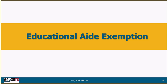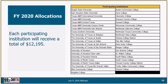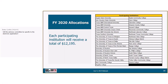Now let's talk about the educational aid exemption, which applies only to public schools. Educational aid exemption allocations have gone out and a list of participating institutions is available both in the announcement and on College for All Texans under the educational aid exemption page. When students contact us, we direct them to this list so they know if their school participates.